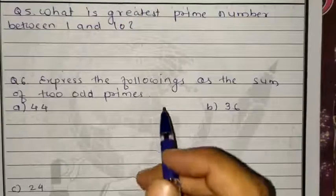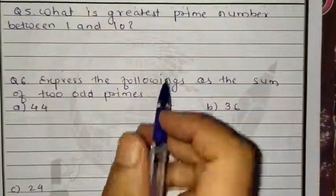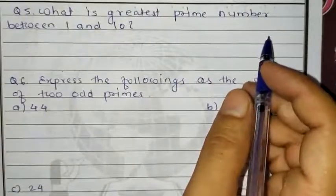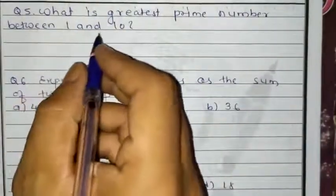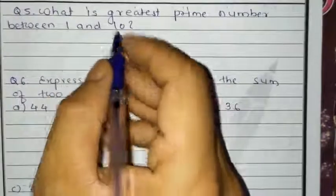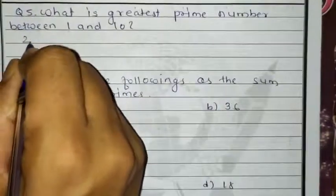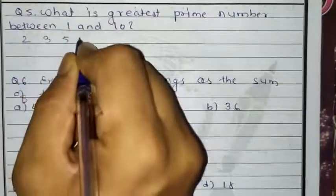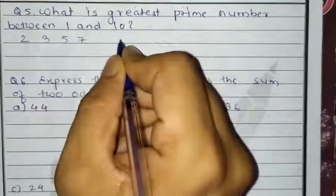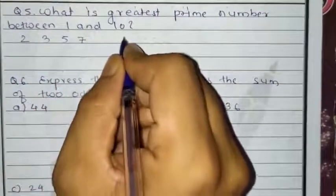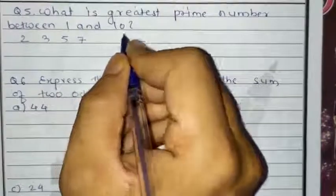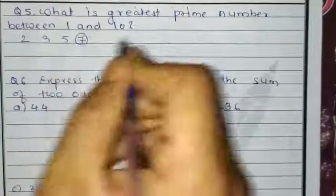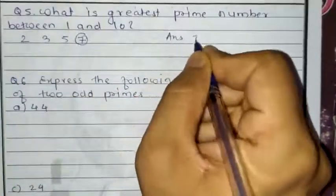Our next question is question number 5: what is the greatest prime number between 1 and 10? The prime numbers between 1 and 10 are 2, 3, 5, and 7. After that, 8 and 9 are not prime. So the greatest prime number is 7.